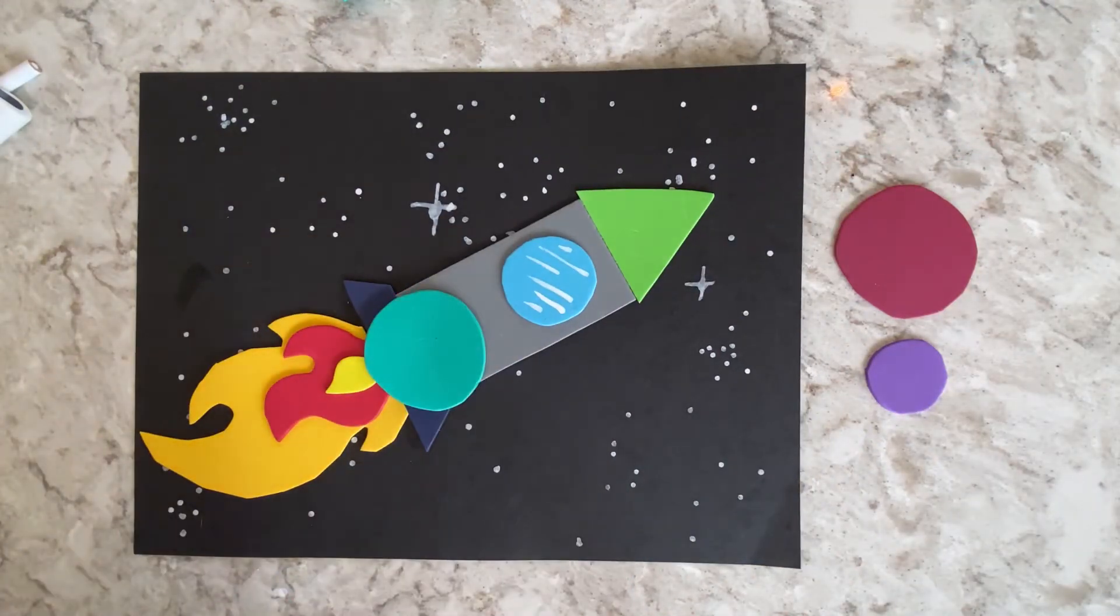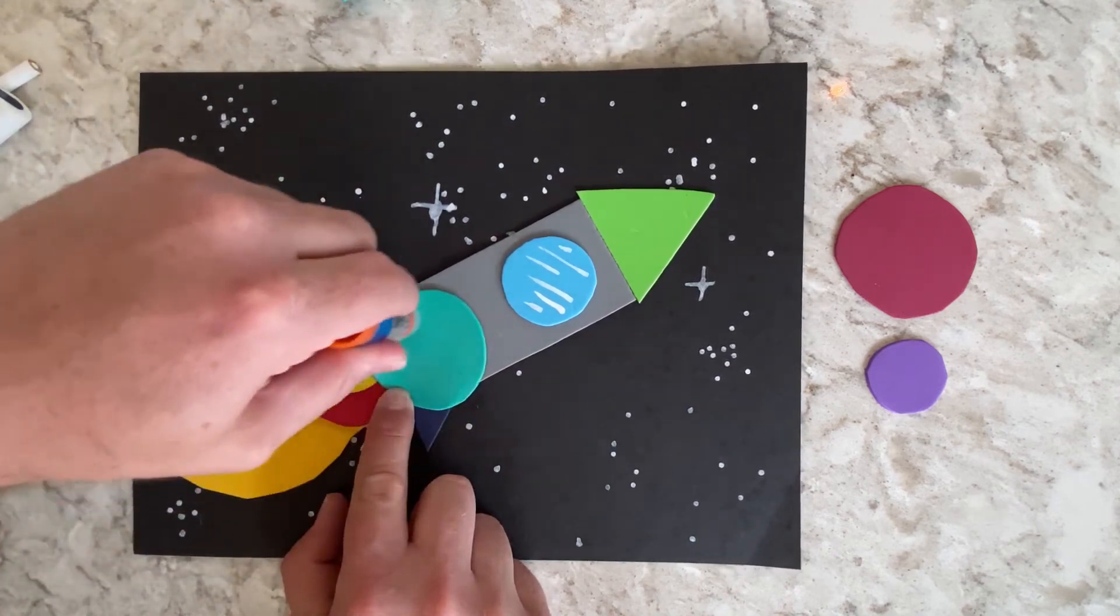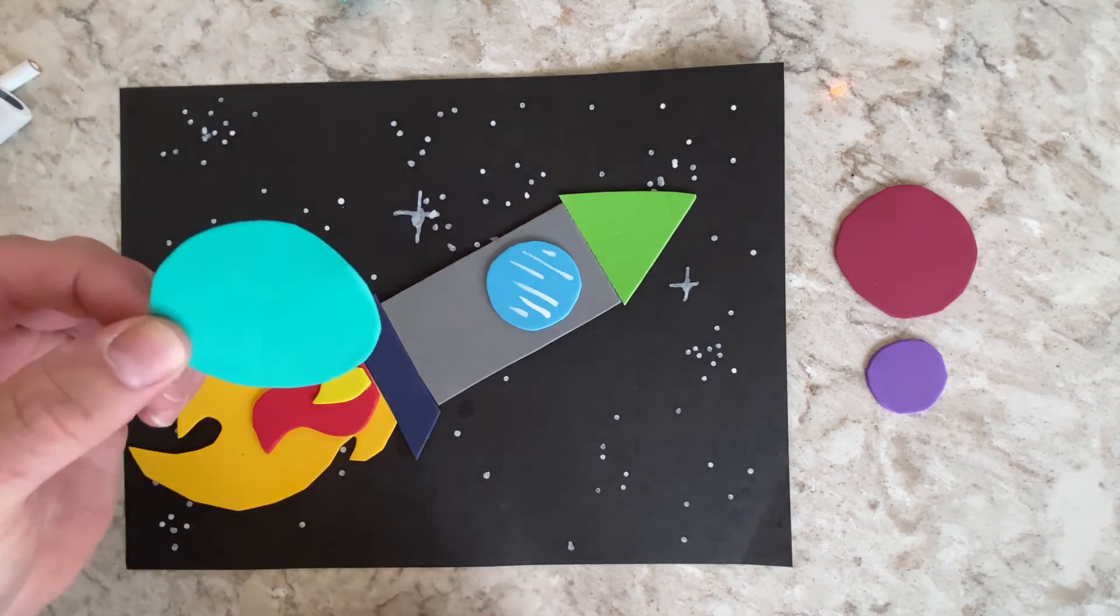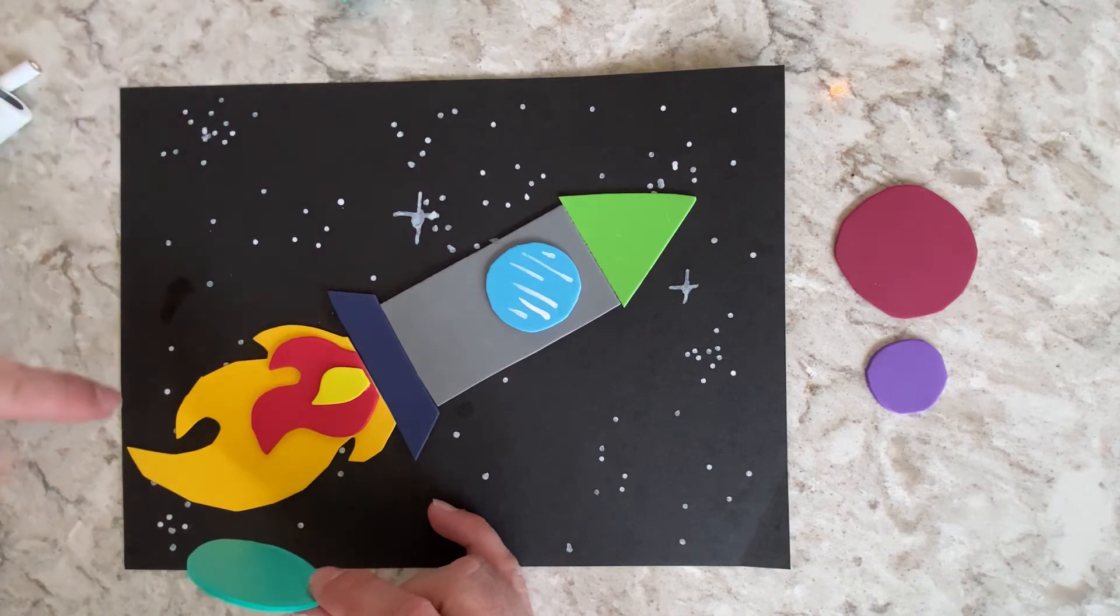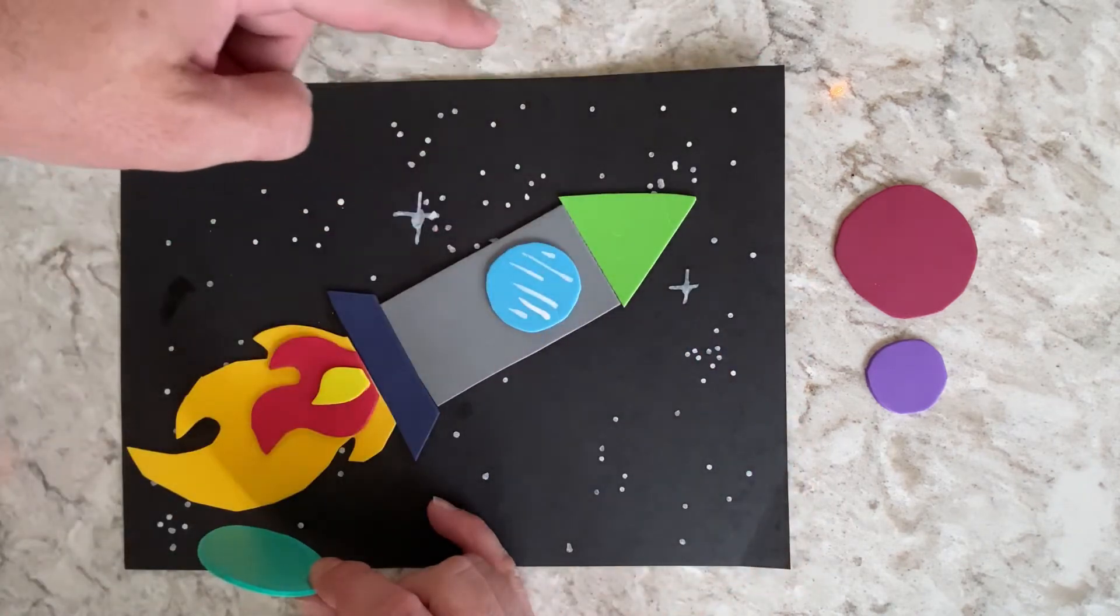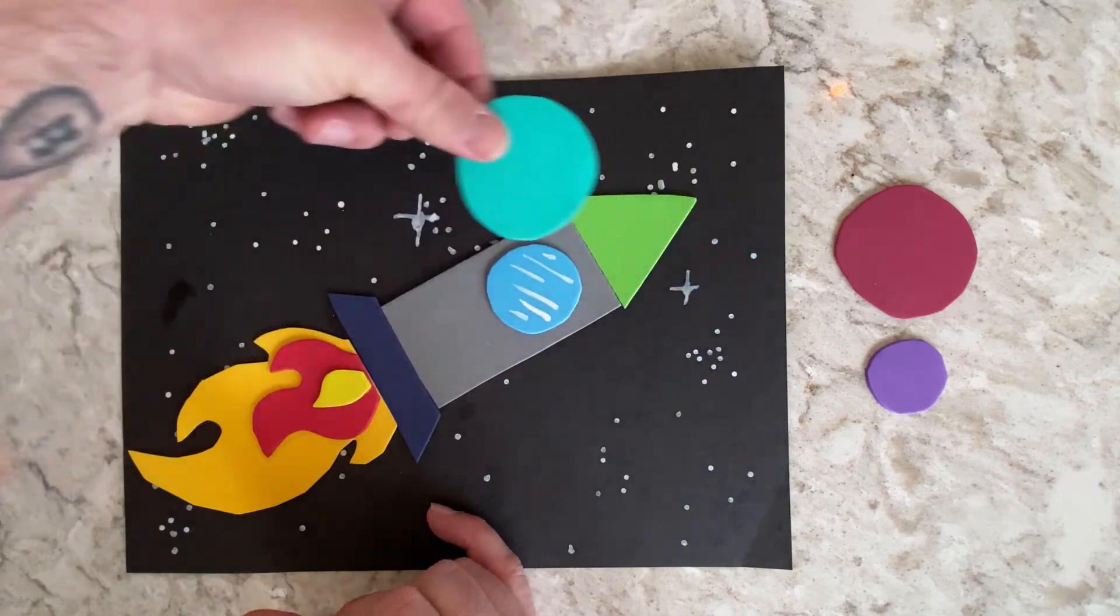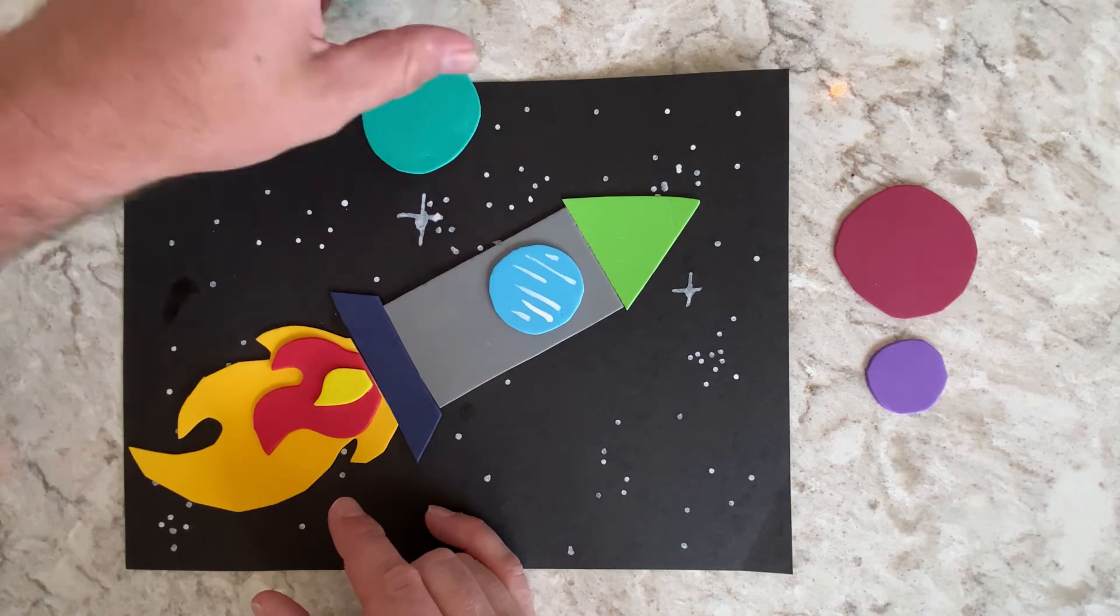So, we're going to take each shape. We're going to put glue on the back. Now, what I'm going to do is, what I think makes art look really cool, is when you break the border of your artwork with something. So, instead of keeping all of this inside the edges of the paper, I'm going to have it stick out just a little bit right here. See? It's sticking out.